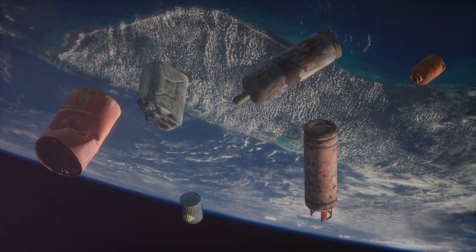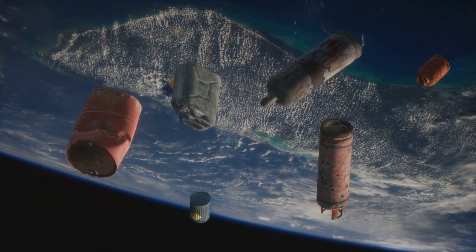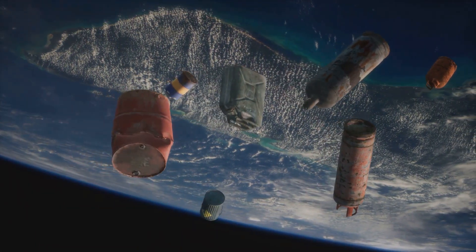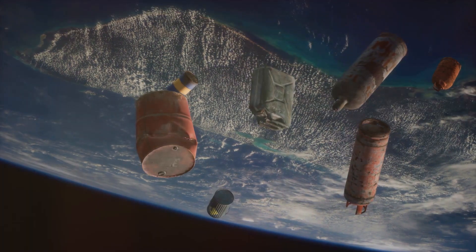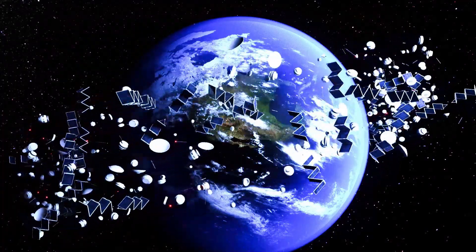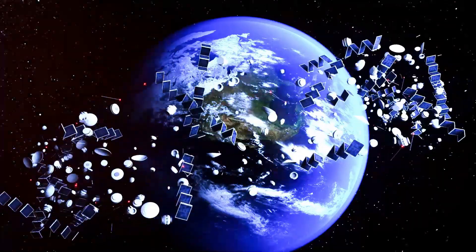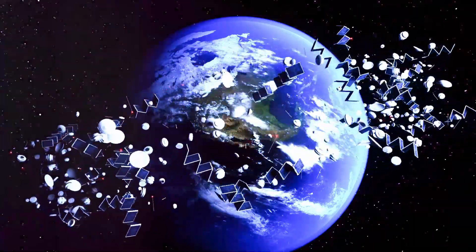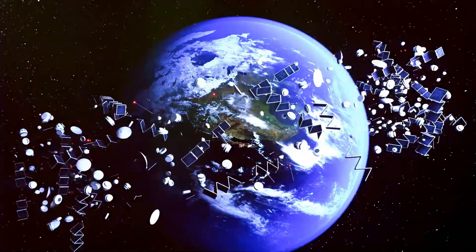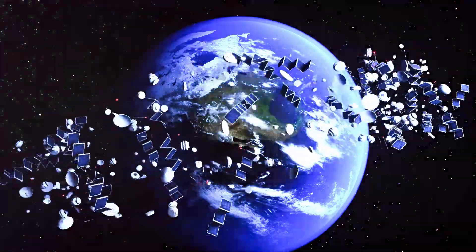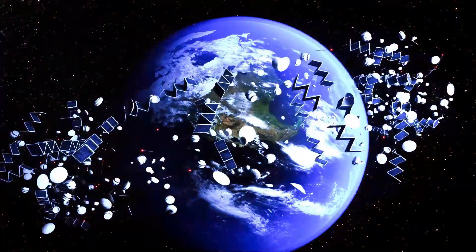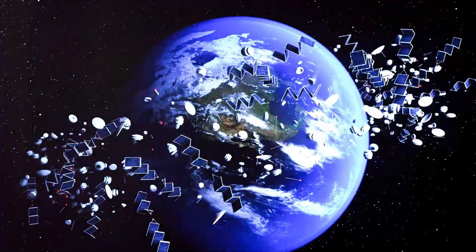But why is this a growing concern? Picture this: You're zipping along on a highway at 60,000 miles per hour when suddenly, a tiny pebble smashes into your windshield. At those speeds, even a small object can have a catastrophic impact. Now, imagine that highway is the space around our planet and the cars are our satellites and space stations.